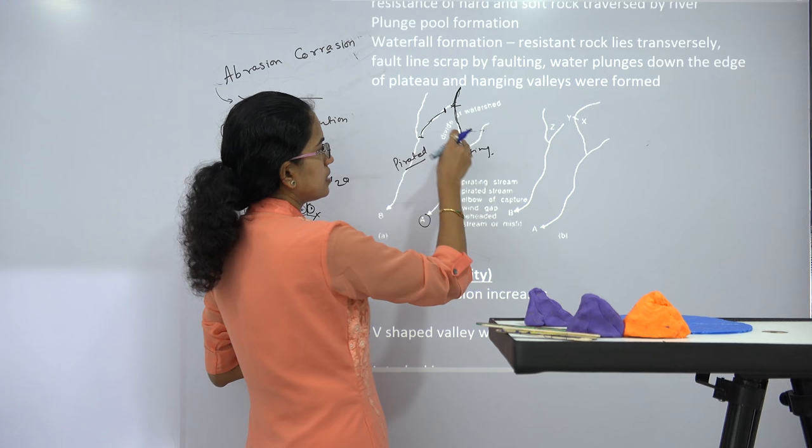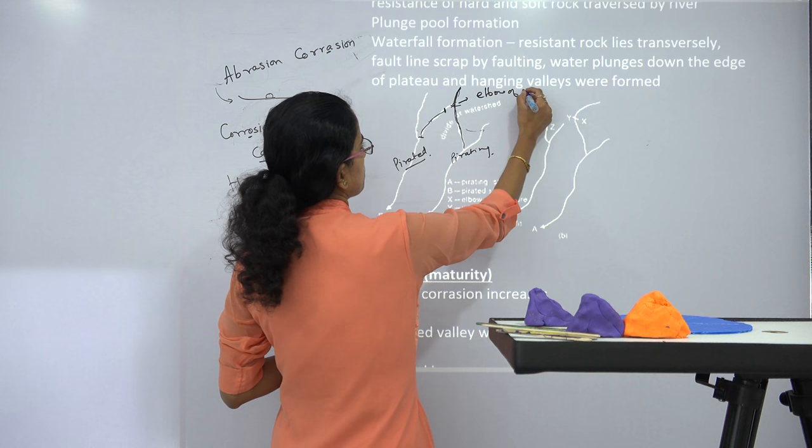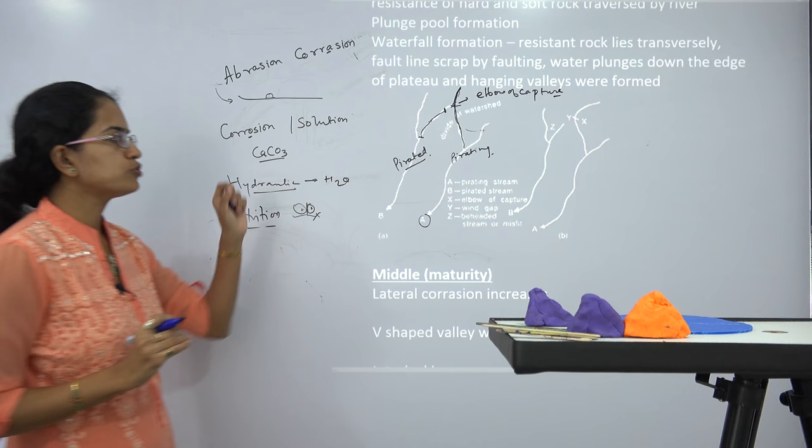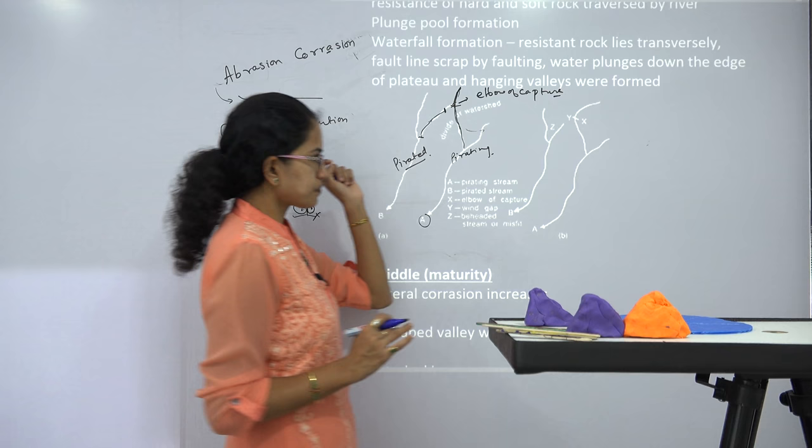The point where the tributary of stream B meets stream A is known as the elbow of capture. These are fundamental terms to understand how a river is captured, and the process of river capture is really very important.